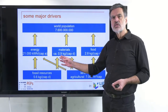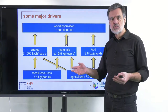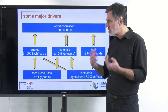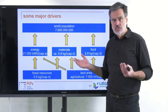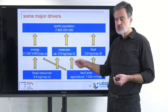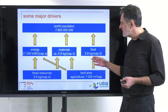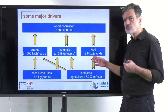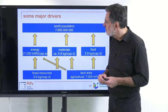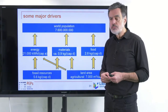Materials consumption is roughly 1 kilogram per capita per day. This includes building materials, textiles, clothing — everything we use materially, including all plastics. And finally food: 2.8 kilograms of primary production per capita per day. The world population is currently around 7.6 billion people.